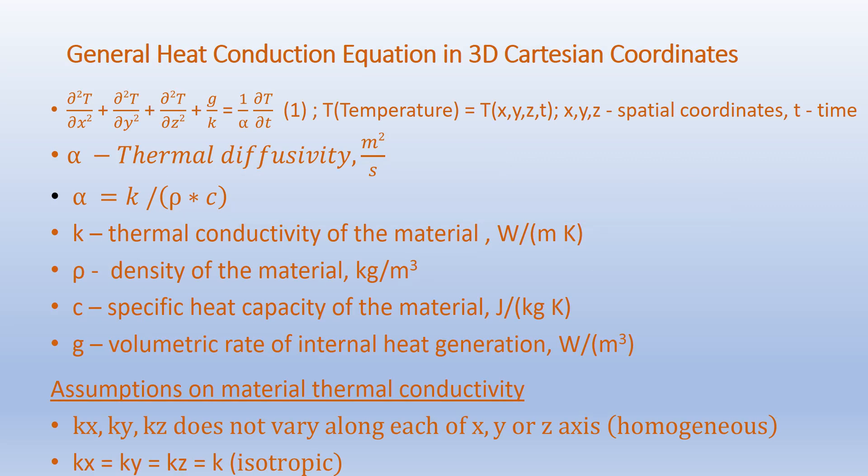Let's get back to the general heat conduction equation in 3D Cartesian coordinates, which is: ∂²T/∂x² + ∂²T/∂y² + ∂²T/∂z² + G/K = (1/α)(∂T/∂t). Uppercase T is the temperature and is a function of the spatial coordinates x, y, z and time. Alpha is a property of the material called thermal diffusivity, given in meter square per second: α = K/(ρC).